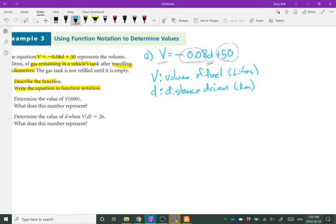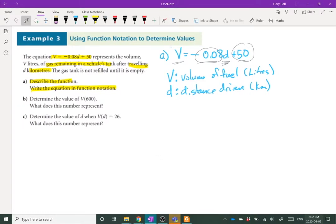So that's what the equation is. Let's rewrite it in function notation, which really isn't all that complicated. So I need to call it something, and usually you end up using the dependent variable. So I'm going to say V of D equals negative 0.08 D plus 50.